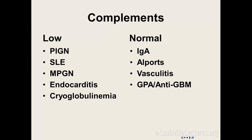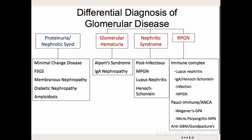Quick review: Low complements are seen in post-infectious GN, lupus, MPGN, endocarditis, and cryoglobulinemia. Normal complements point toward IgA, vasculitis, or other causes. For nephrotic syndromes, use the mnemonic 'M&M FAN': Minimal change disease, Membranous, FSGS, Amyloid, and Nodular (diabetic nephropathy with Kimmelstiel-Wilson nodules).